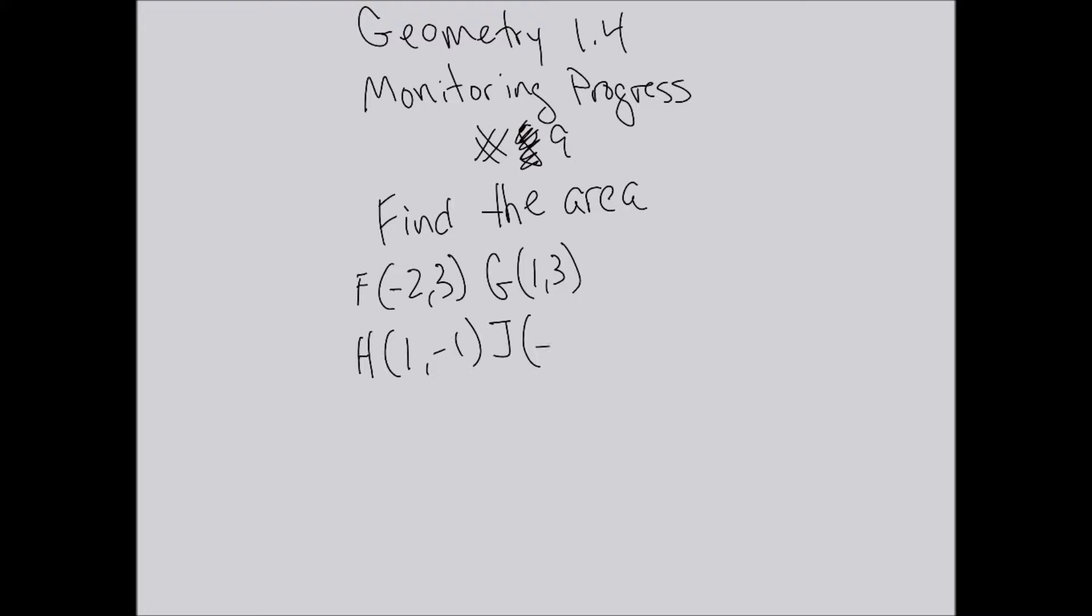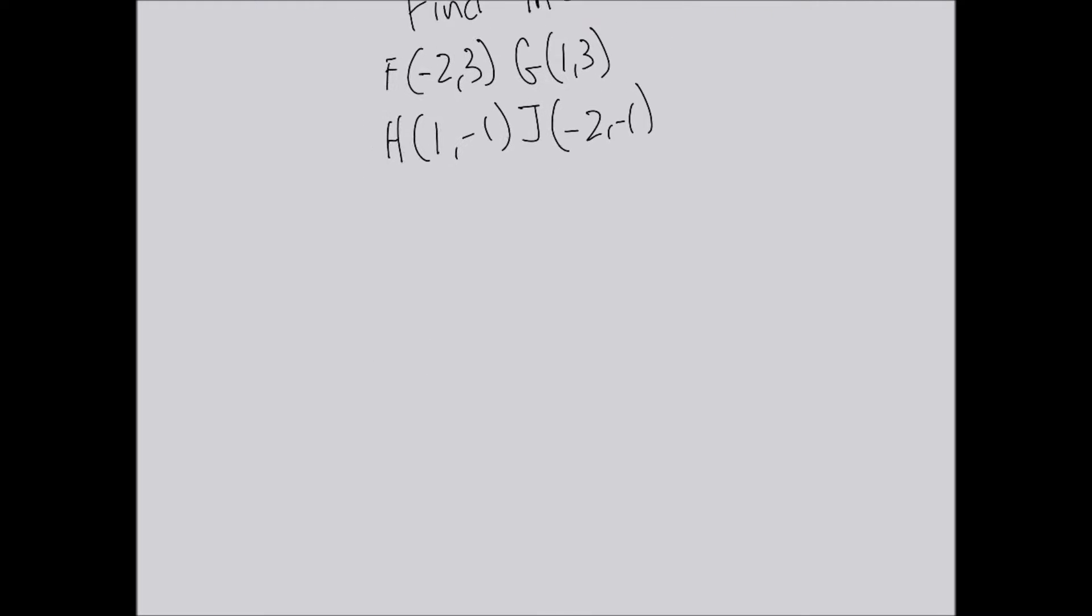Alright, we've got Geometry section 1.4, monitoring progress number 9. Find the area of FGHJ. Notice that F and G have the same y-coordinate, which means they're directly across from each other left to right. H and J also have the same y-coordinate at negative one.